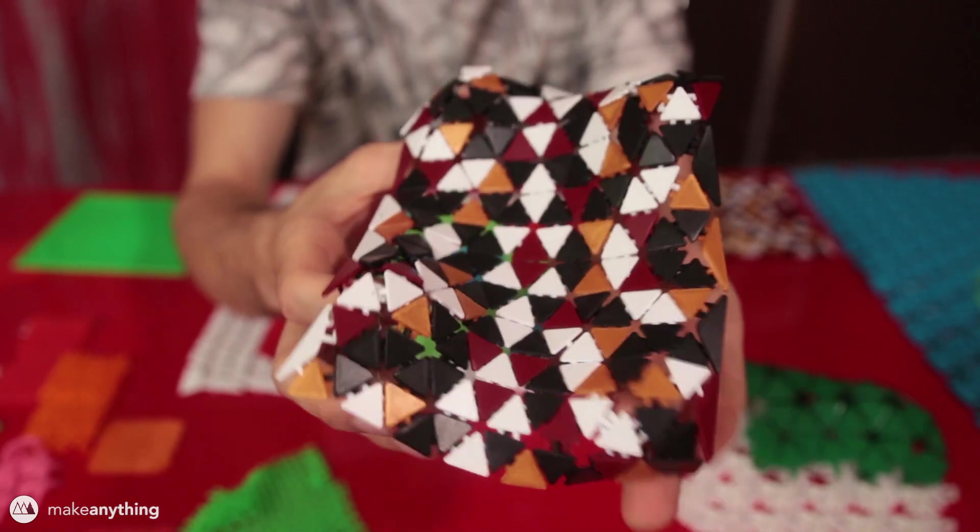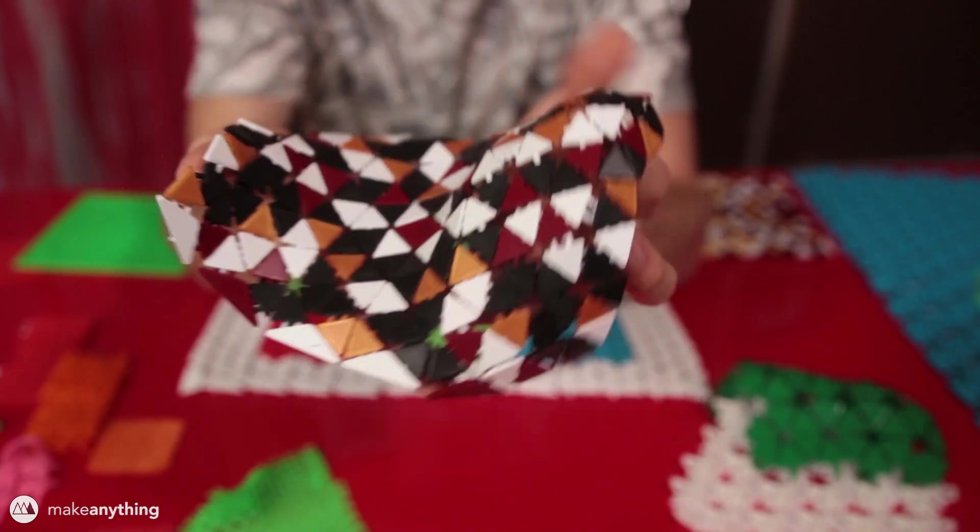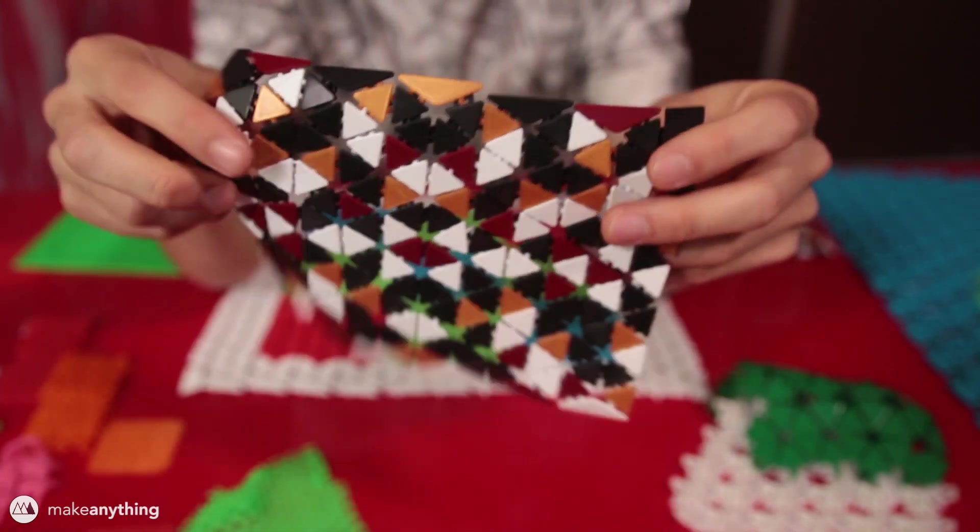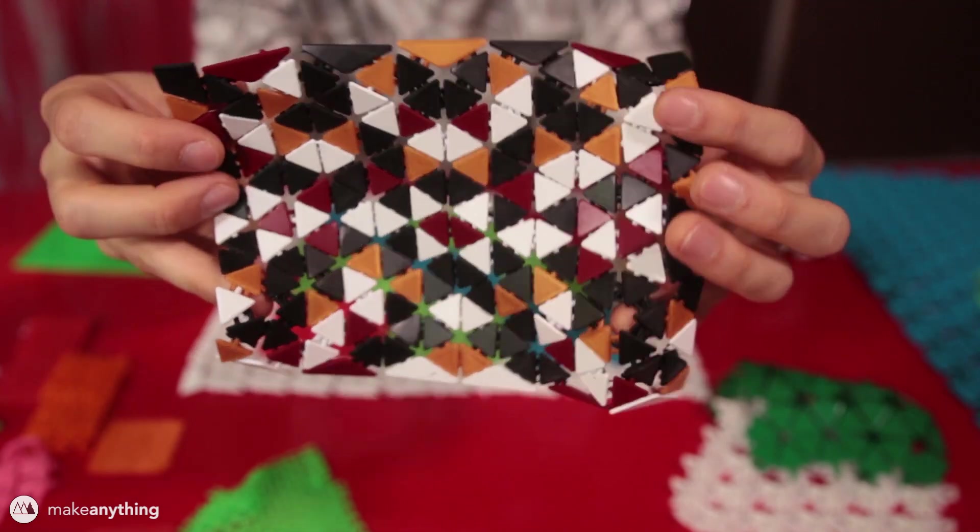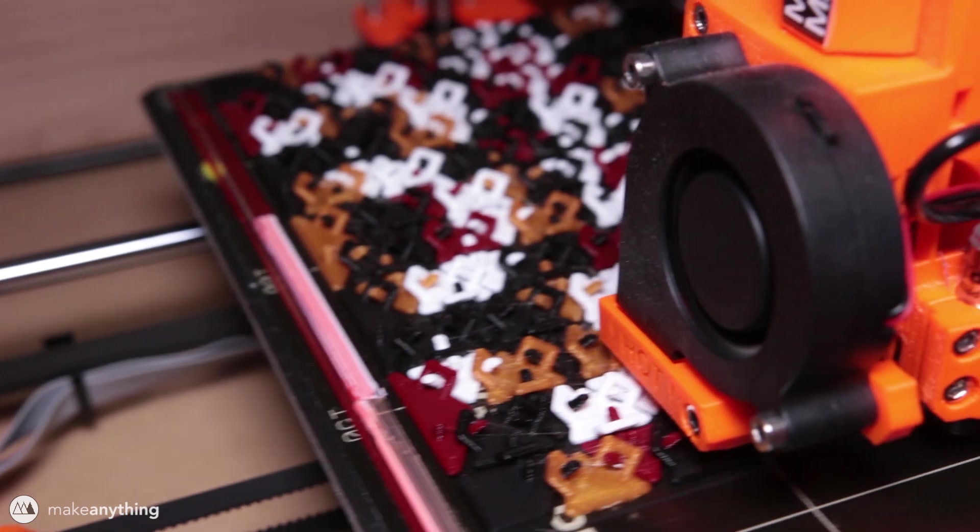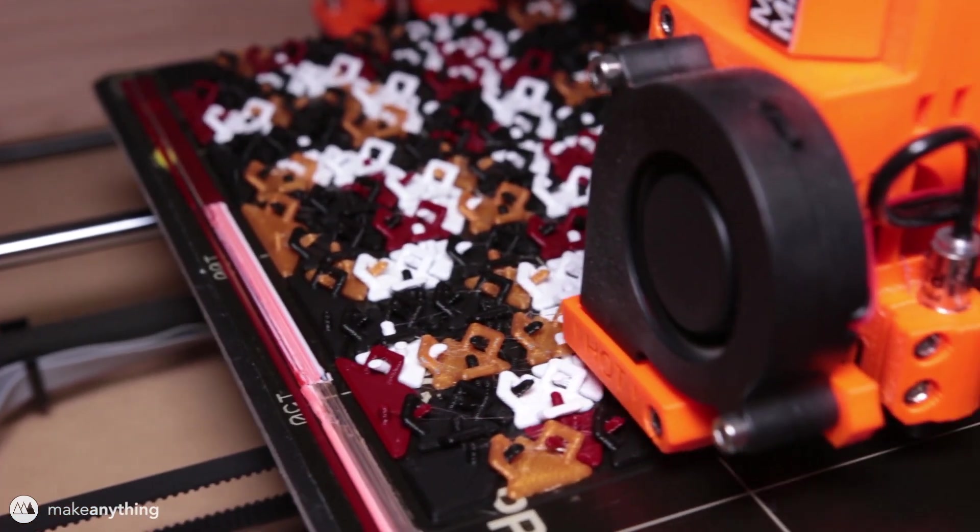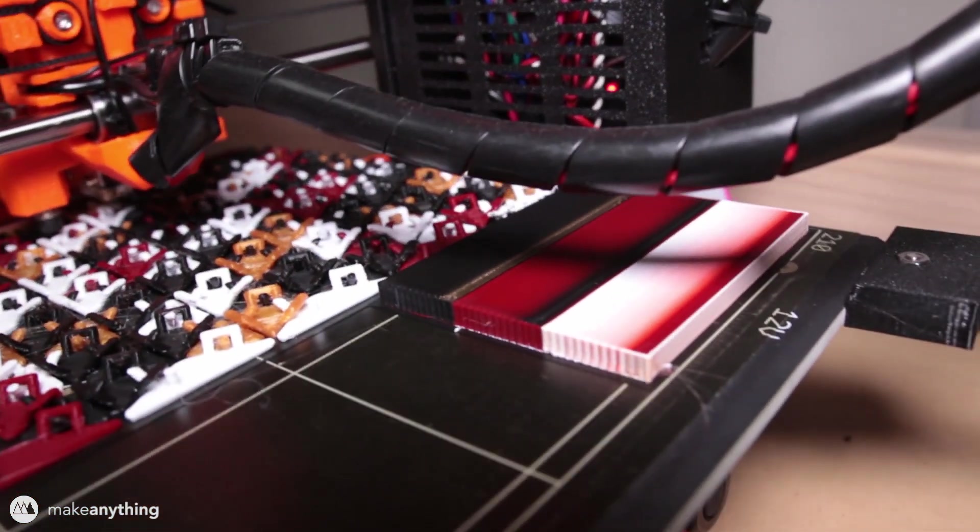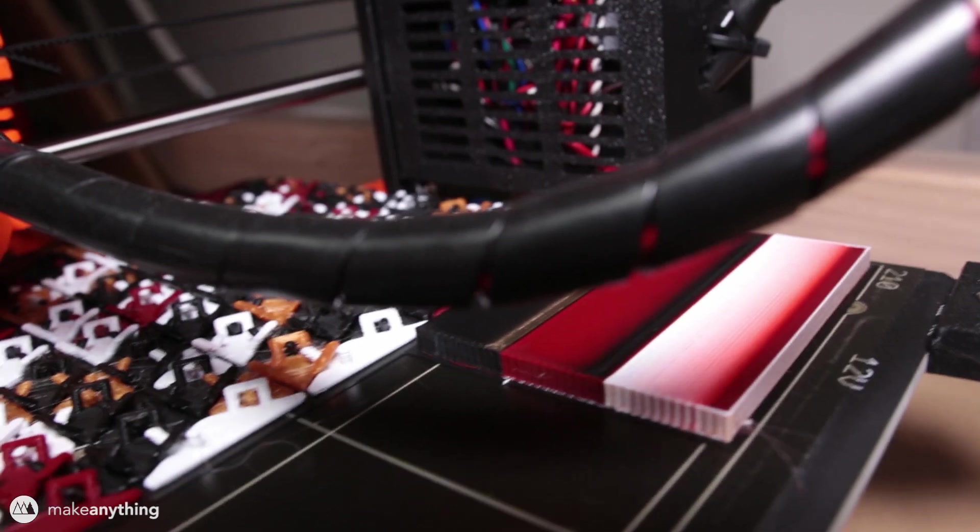Believe it or not this was made in a single print without using any 3D pen or anything. It was made using the multi-material upgrade for the Prusa i3 Mark II printer and this printer only has one nozzle but it uses a purge block to blend between the different colors so that it can get really clean four color prints.